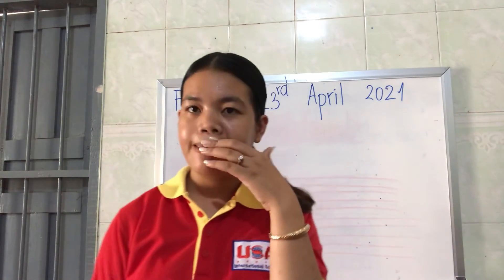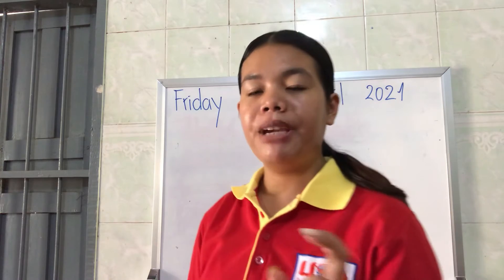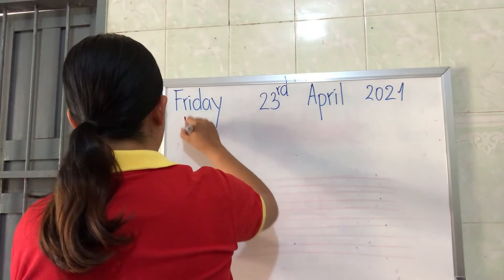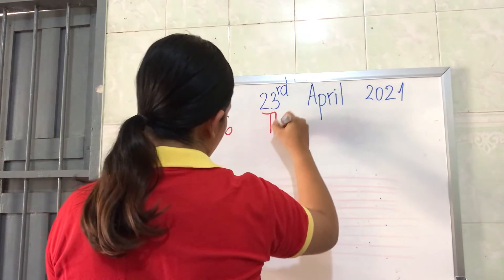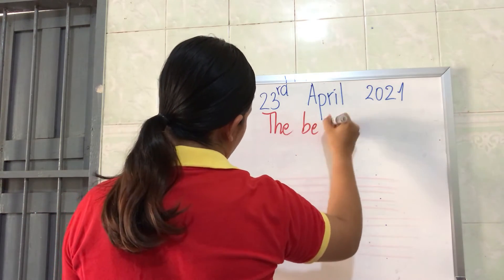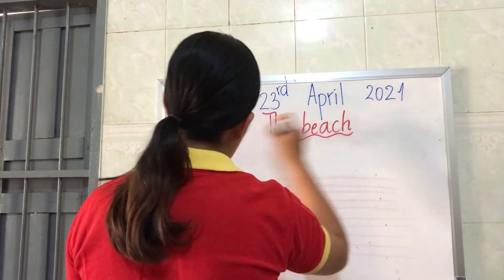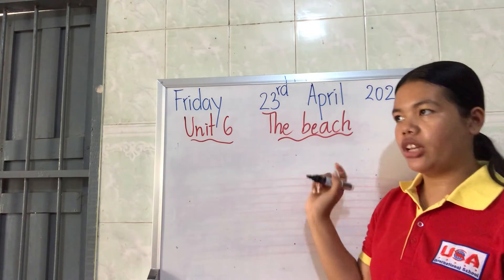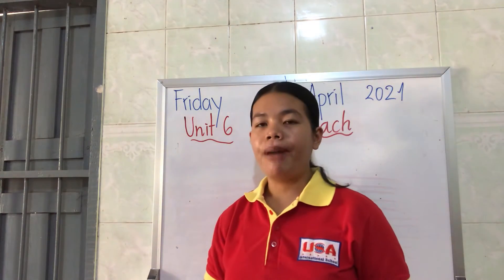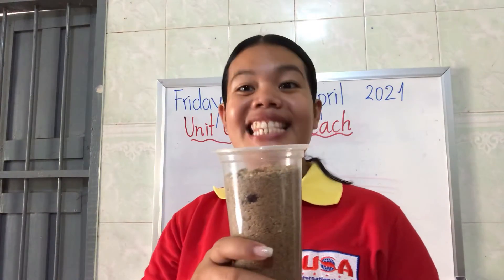Can you tell me about Unit 6 — what is the title? It is 'The Beach.' Can you spell it? T-H-E B-E-A-C-H, the beach. Yesterday we learned about this word — what is it? It is 'sand.'